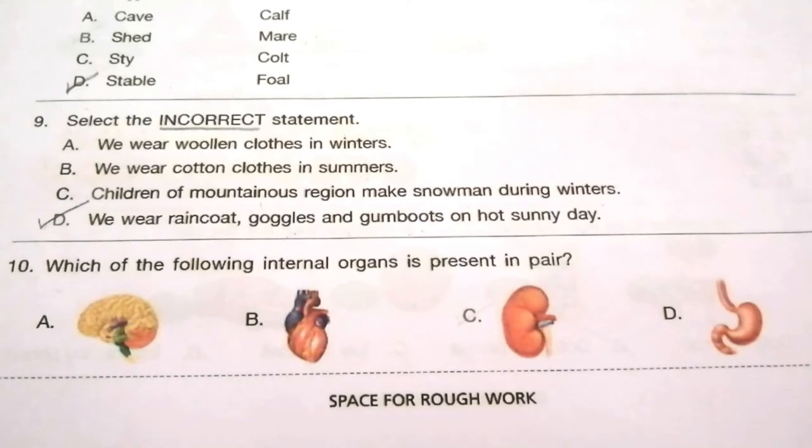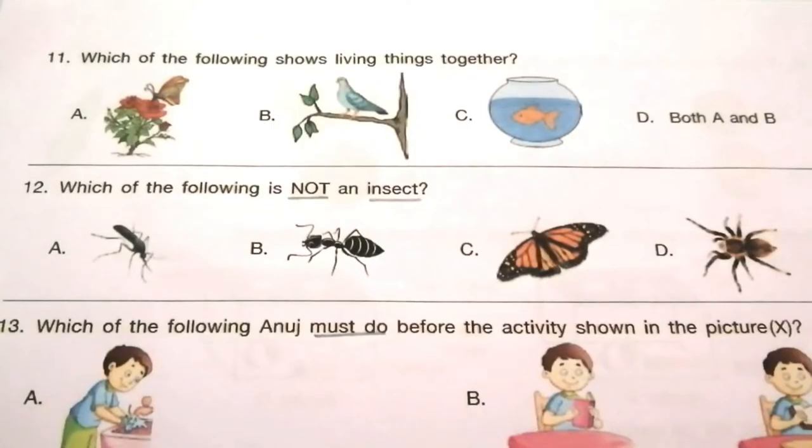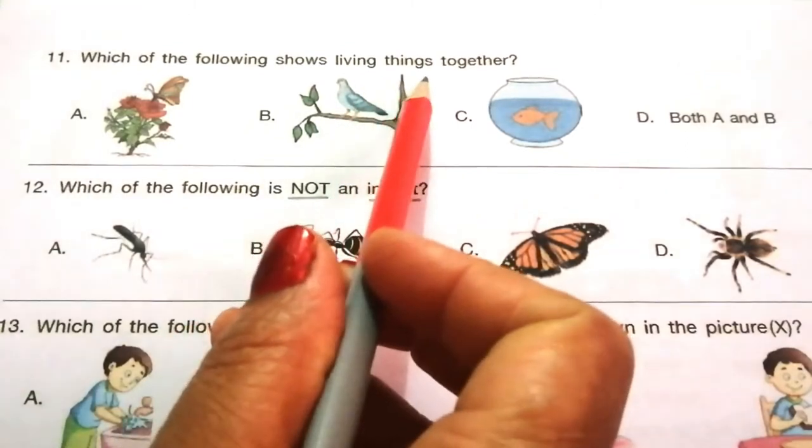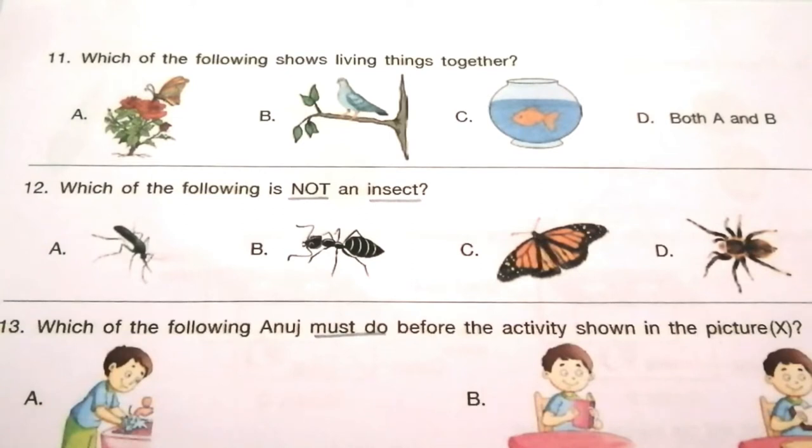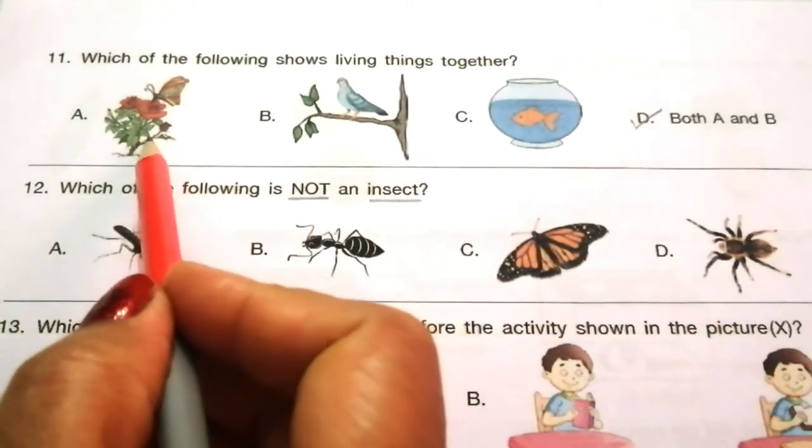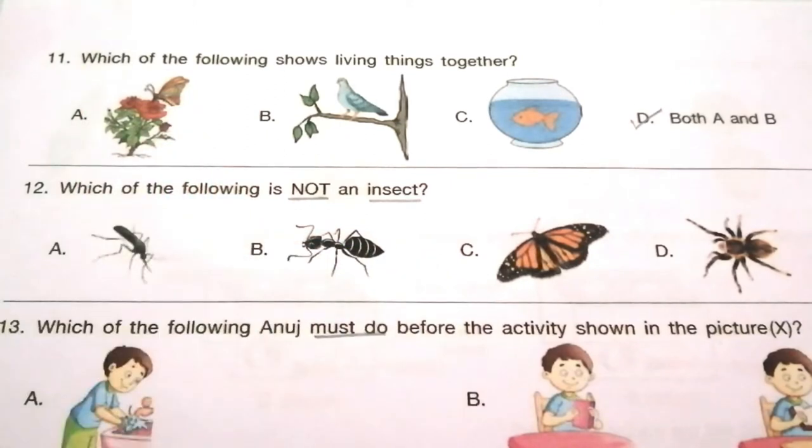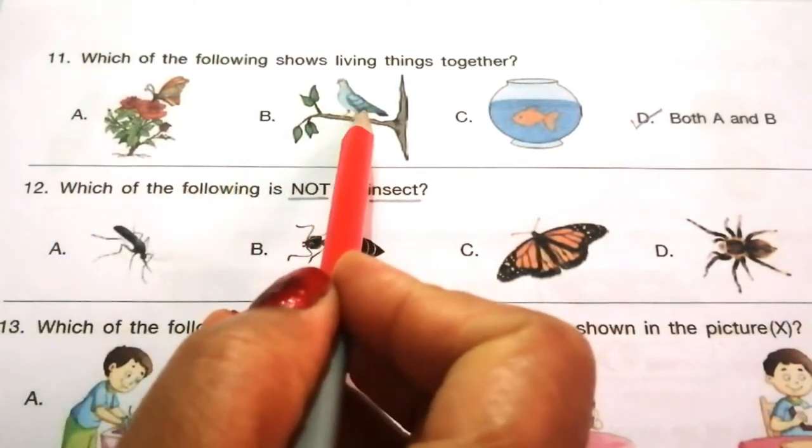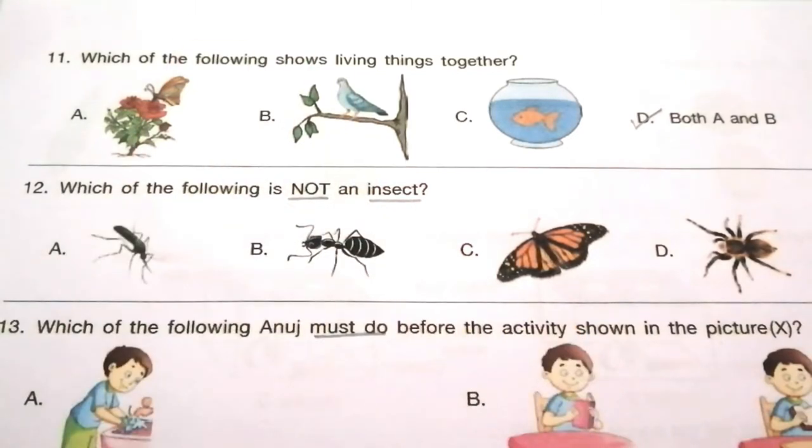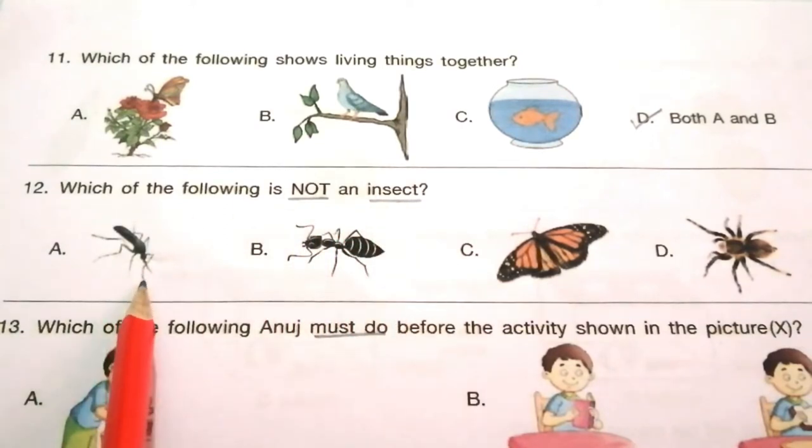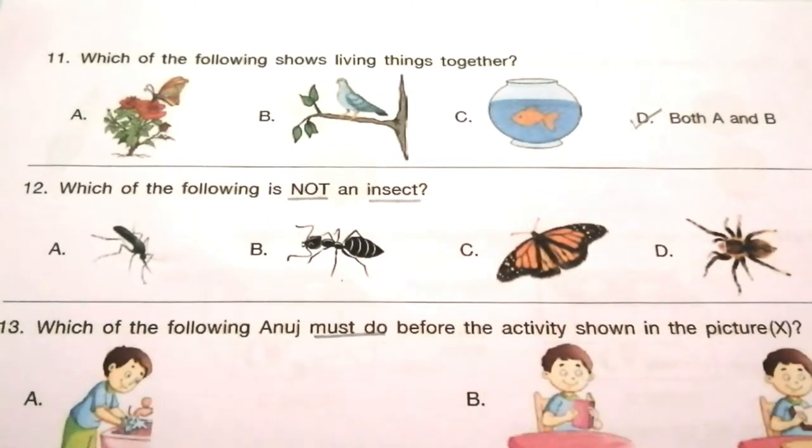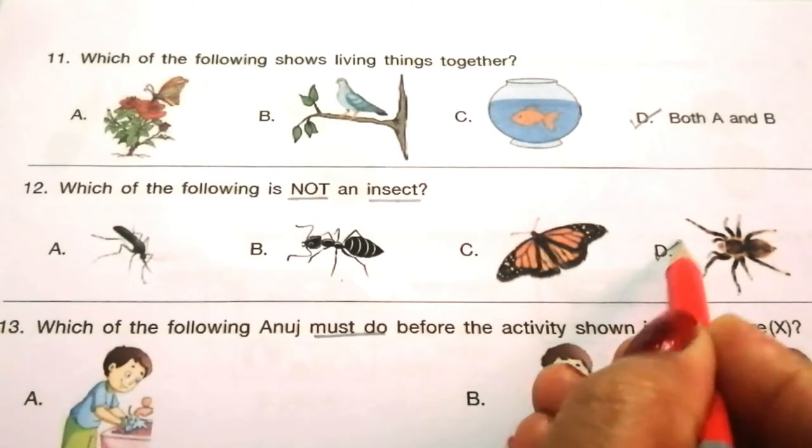Question 10: Which internal organ is present in the chest? The answer is C, kidney. Question 11: Which shows living things together? The answer is D, both A and B. Both plant and butterfly are living things, likewise tree and pigeon are living things. Question 12: Which of the following is not an insect? The answer is D, spider.